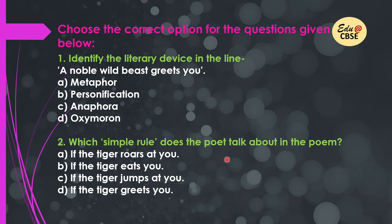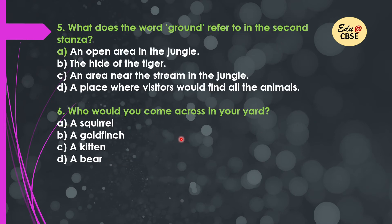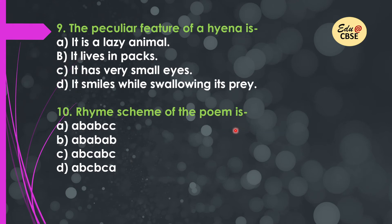Question two: which simple rule does the poet talk about in the poem? Question three: which word means 'to recognize' in the poem — you can pause at the slide, read the options, and select your answer. Question four: which literary device has been used to describe a chameleon? Question five: what does the word 'ground' refer to in the second stanza? Question six: who would you come across in your yard? Question seven: how would a bear clear all your doubts? Question eight: a crocodile would always be seen doing what? Question nine: what is the peculiar feature of a hyena? Question ten: what is the rhyme scheme of the poem?